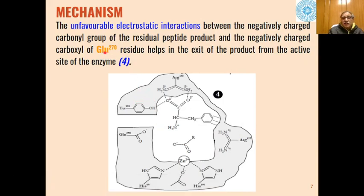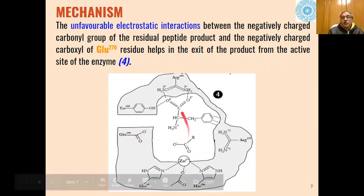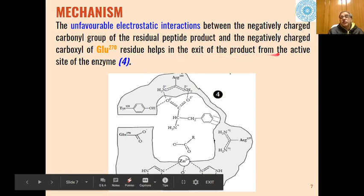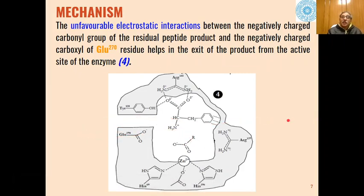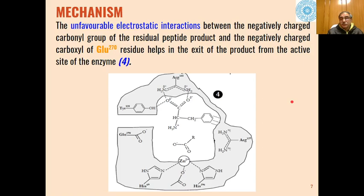In the last step, the unfavorable electrostatic interaction between the negatively charged carbonyl group of the residual peptide product and the negatively charged carbonyl of glutamic acid residue helps in the exit of the product from the active site of the enzyme. Because of the negative charge on both of these, the product will get removed from the active site of the enzyme.